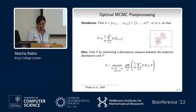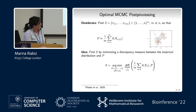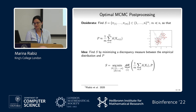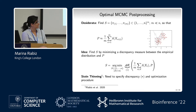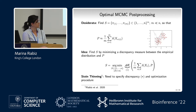We decided to go with an approach that minimizes a discrepancy measure between our empirical distribution and the target, setting the cardinality of the points retained. We came up with a method we call Stein Thinning. This method specifies what discrepancy measure we use between the empirical distribution and the target, and how we solve this combinatorial optimization problem.